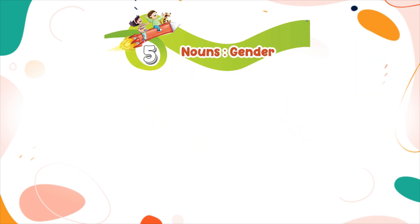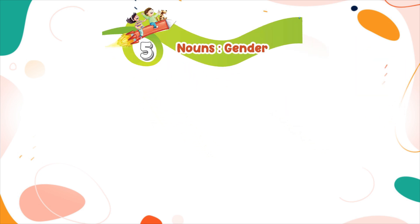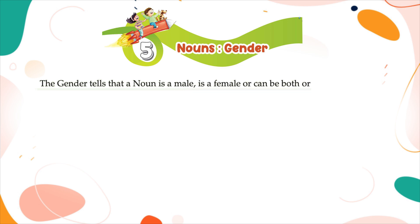Chapter 5: Nouns. Gender tells us whether a noun is male, female, both, or lifeless. There are four kinds of genders.